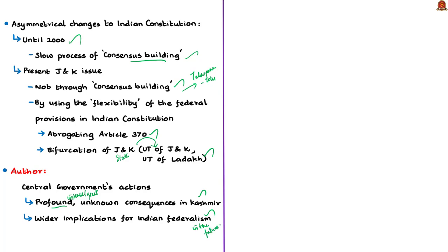From this editorial, key takeaways are: the meaning of asymmetric federalism, arguments made against it, and the flexible nature of Indian federalism — including theories of demos-constraining versus demos-enabling and relevant historical events.